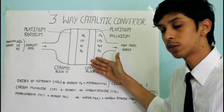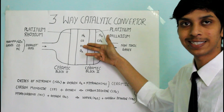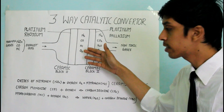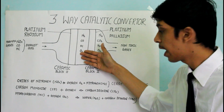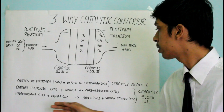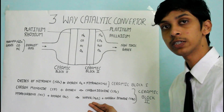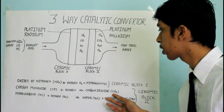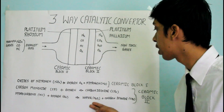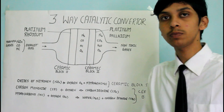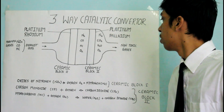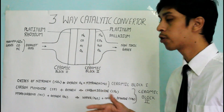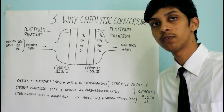With the help of ceramic block two, the hydrocarbons (HC) react and mix with oxygen atoms — hydrocarbons plus oxygen — forming water vapors and carbon dioxide. So carbon monoxide is converted into carbon dioxide, and hydrocarbons are converted into water vapor and carbon dioxide.